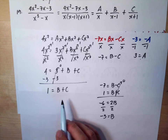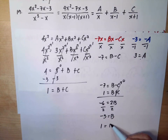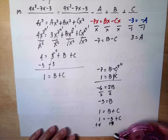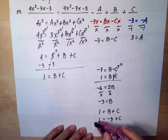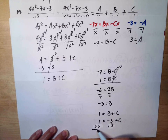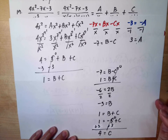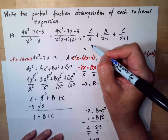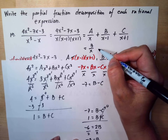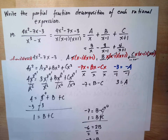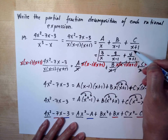Now we solve for c using 1 equals b plus c. Substituting b equals negative 3: 1 equals negative 3 plus c. Adding 3 to both sides gives c equals 4. We can now rewrite the decomposition: a is 3, b is negative 3, and c is 4. So the final answer is 3 over x, minus 3 over (x minus 1), plus 4 over (x plus 1).